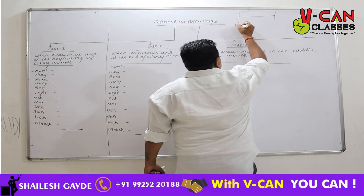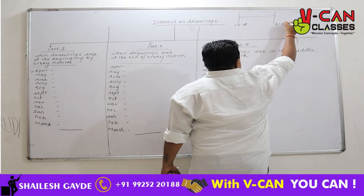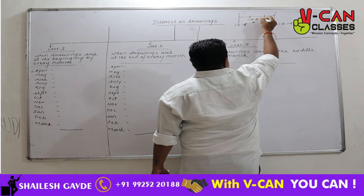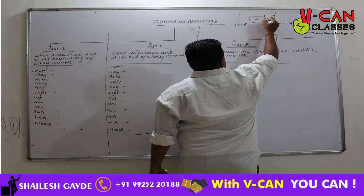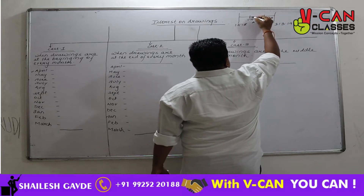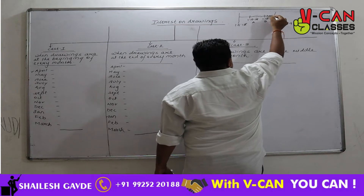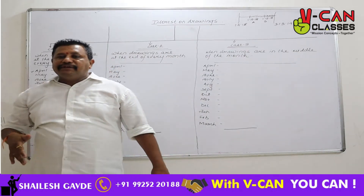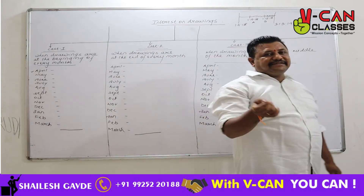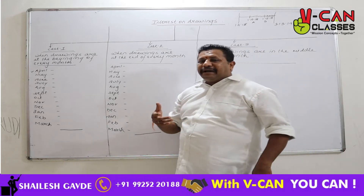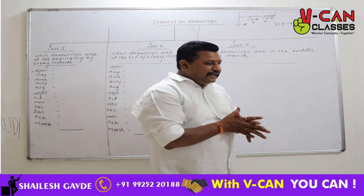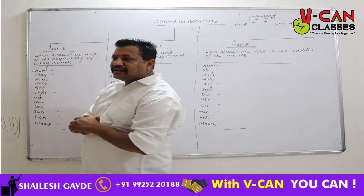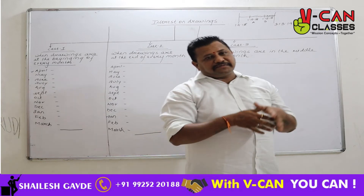For example, taking one accounting year from 1st April 2018 to 31st March 2019 — Mr. A has withdrawn on 1st October 2018 and Mr. B has withdrawn on 1st December 2018. So if a partner withdraws once or twice in the whole year, it is very easy to calculate interest on drawings. But practically that doesn't happen — practically, business owners make drawings at regular intervals throughout the year to run their household.